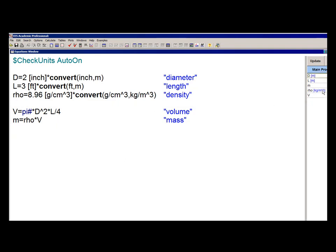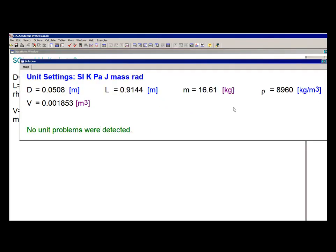And if I have selected Set Units Automatically, when I hit Solve you'll see that EES has determined that the units for the variable V should be meters cubed and the units for the variable M, or mass, should be kilogram.